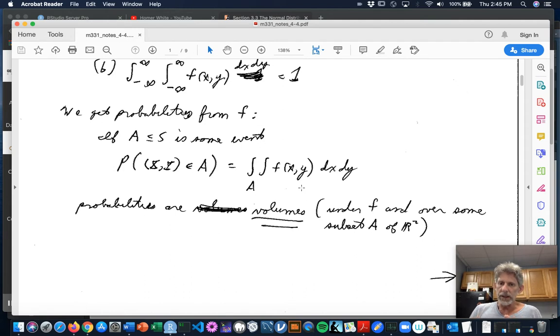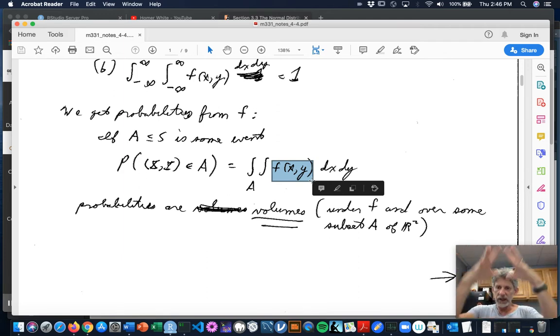So really, probabilities here are volumes underneath a surface. You see, the graph, z equals f of x, y, graph of a function of two variables, is some surface. And underneath that surface, down to the x, y plane, is a solid. And its volume is that probability.